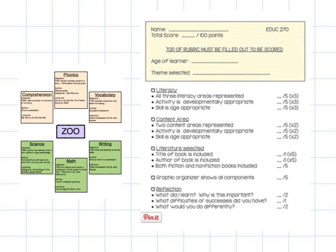So you can see there's a couple categories you're scored on. First of all, I'm looking at literacy. Do you have all three areas of literacy represented on your web? So comprehension, phonics or phonemic awareness, and vocabulary. You get five points just for having that topic there. The activity that you choose, is it developmentally appropriate? For each of those categories, it's worth five points.